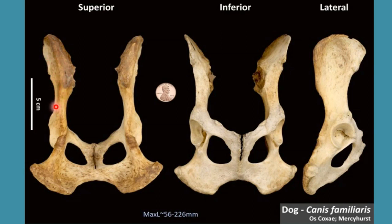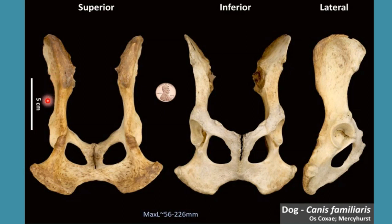The first surface is the lateral surface, which is concave cranially, while if we move caudally it is slightly flat. The lateral surface of ilium is also known as the gluteal surface due to the presence of the middle gluteal muscle and deep gluteal muscle.